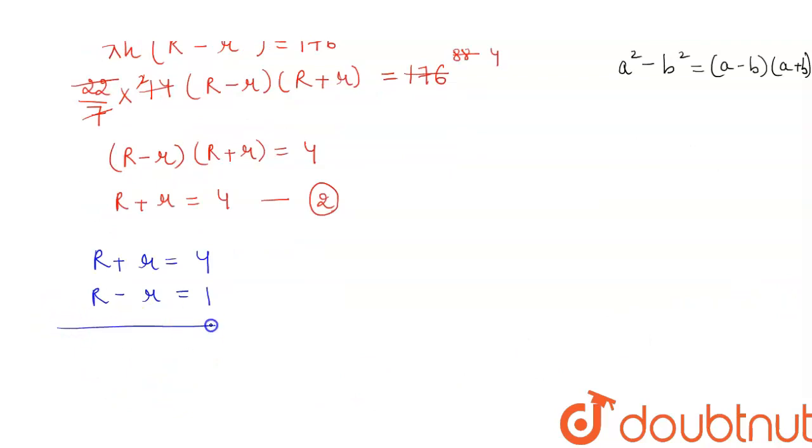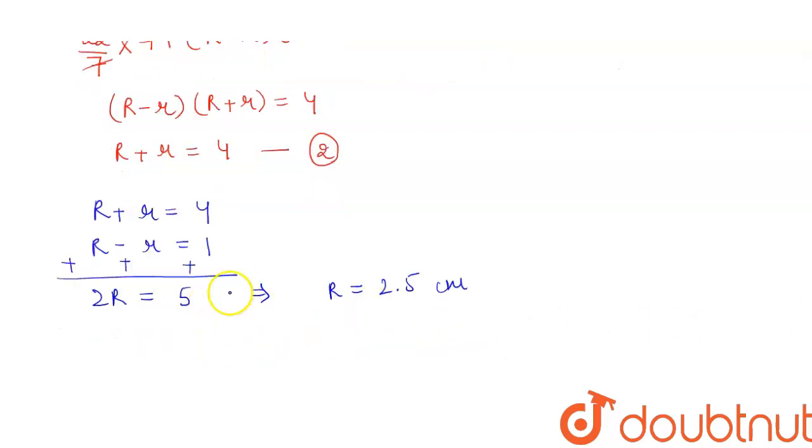If we solve these two equations and add them, we will get 2 times capital R is equal to 5, and from here we get the value of capital R to be 2.5 centimeters. If we put back the value of R in our first equation, we will get 2.5 - r = 1.